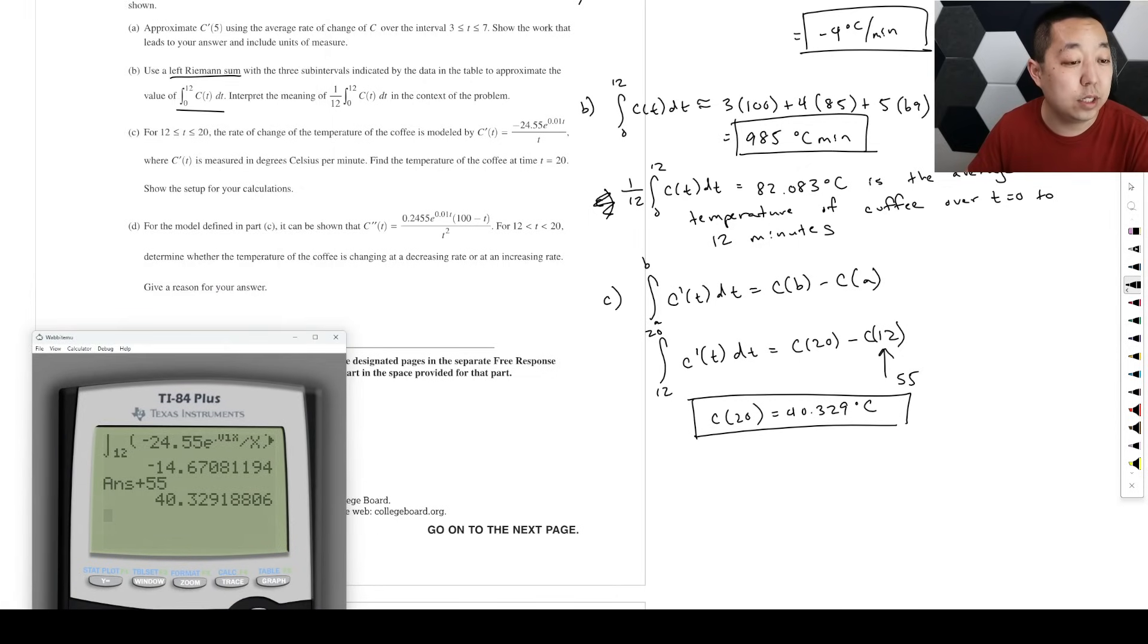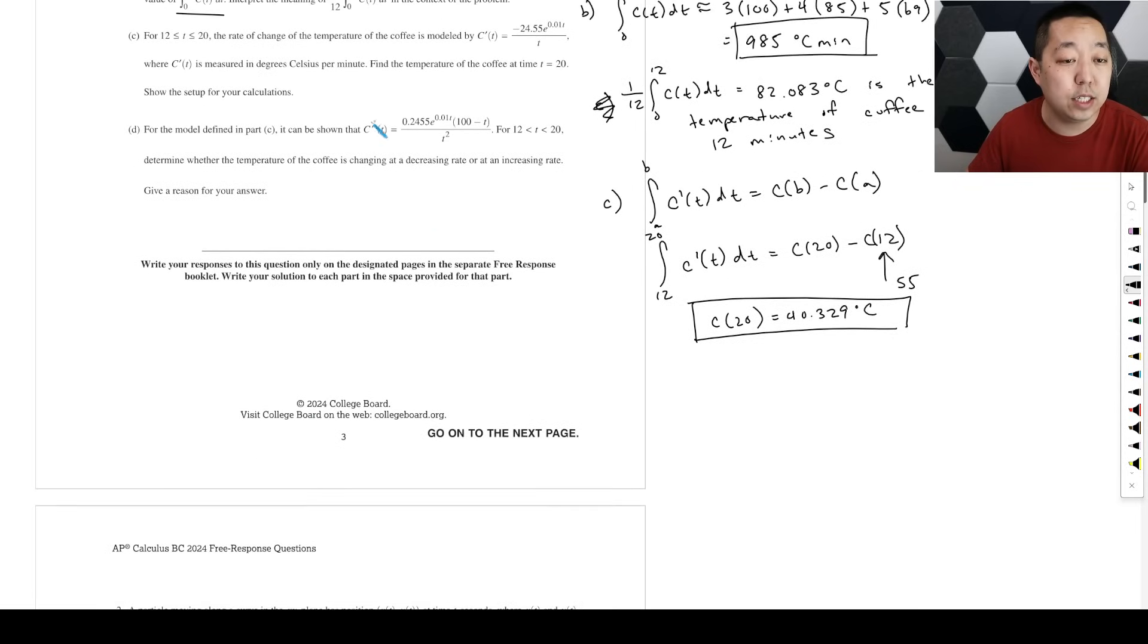Continuing on to part D, for the model defined in part C, it can be shown that C double prime is given that. They're just showing you that—if you took the derivative of this, you could get this quantity. Determine whether the temperature of the coffee is changing at a decreasing rate or an increasing rate. This is a little bit tricky on the terminology. They're asking you if the rate that the temperature is changing is increasing. So that means whether C double prime is positive or negative for decreasing, or C double prime is positive. So you have to demonstrate for that.